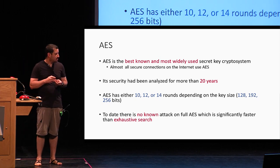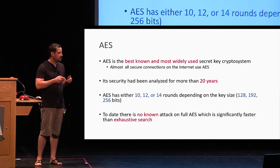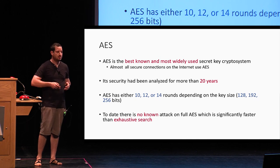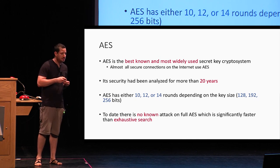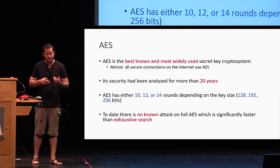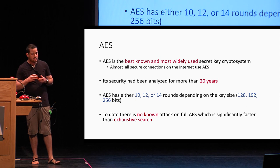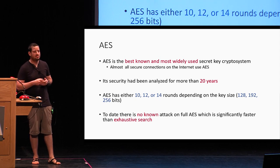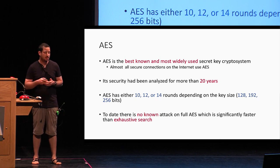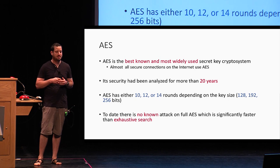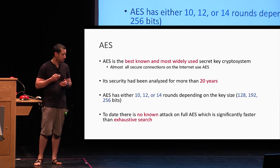AES has either 10, 12, or 14 round structure, and this depends on the key size. To date, there is no known attack against full AES that is significantly faster than exhaustive search.